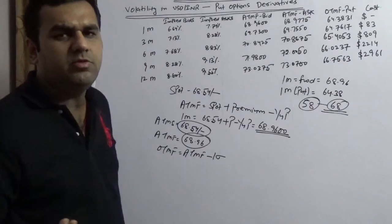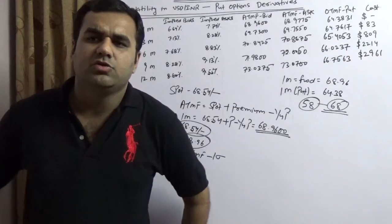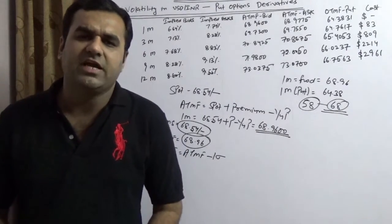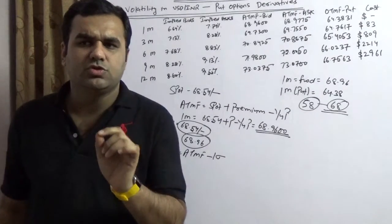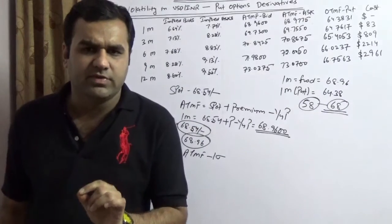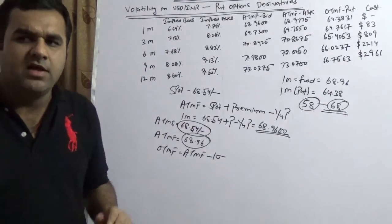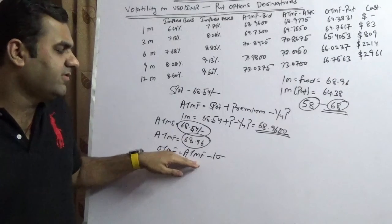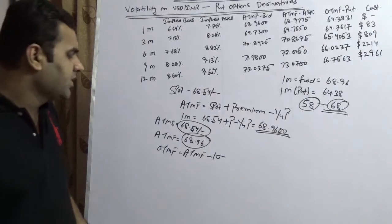So rather than booking your contracts using plain vanilla forwards, you should book via put option and that too out of the money forward. Now the purpose of the video is also to introduce you one more aspect of out of the money forwards. Now here as a trainer I am telling you that out of the money forward is at the money minus 1 implied volatility.